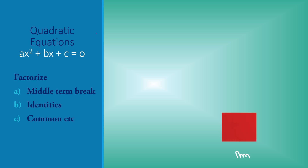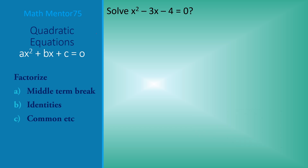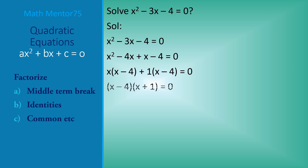Factorization is the most commonly used and well-understood method. We can use identities as well if possible, but in this example it is not possible. We do the middle term break, taking common and further common to get the factors. We then equate each factor to zero and get our final answers: x = 4 and x = -1. This process is known as factorization.